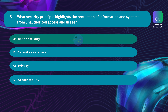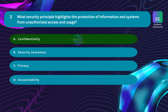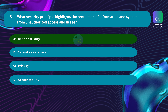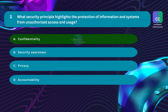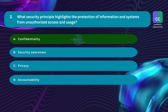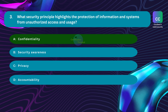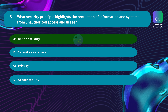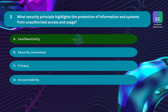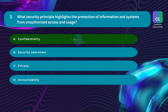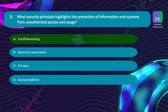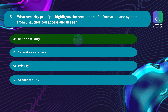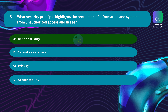The correct answer is Option A: confidentiality. Confidentiality focuses on restricting access to information to authorized individuals or entities, ensuring that sensitive data remains accessible only to those with proper authorization. Option B, security awareness, is incorrect — it pertains to educating individuals about potential security risks, best practices, and policies. Option C, privacy, is incorrect — it involves the protection and control of personal or sensitive information, ensuring individuals have the right to determine how their data is collected, used, disclosed, and stored. Option D, accountability, is incorrect — it involves assigning responsibility for actions or decisions and the obligation to report, explain, or justify them.